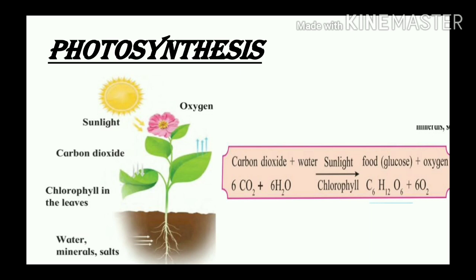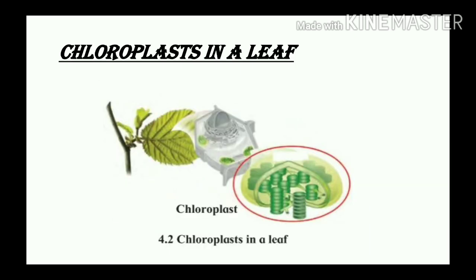Water, minerals, and salts are absorbed by roots from the soil, and the stem transports them up to the leaves. The leaves have microscopic openings called stomata through which they take in carbon dioxide from the air. The chlorophyll present in the leaves absorbs sunlight, helping to convert carbon dioxide and water into food. Oxygen is given out in this process. Besides leaves, photosynthesis also takes place in other parts like green stems, as they contain chlorophyll.